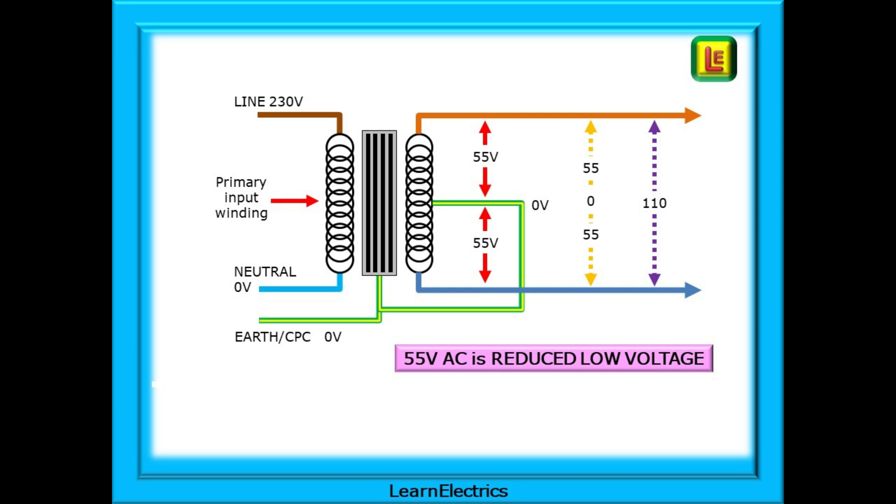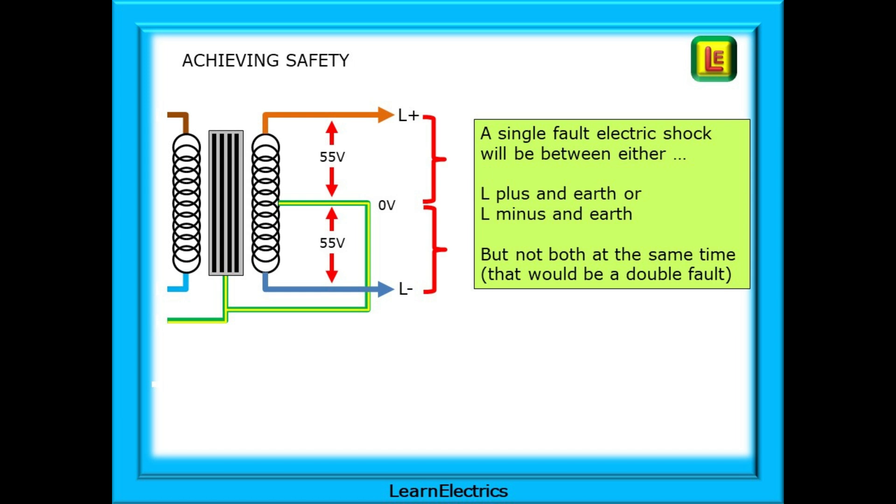An electric shock of 55 volts is unlikely to prove fatal to a healthy adult that is clothed and booted. The 110 volt centre tapped earth system will achieve safety because a single fault electric shock will be between either L plus and earth or L minus and earth, but not both at the same time as that would be a double fault and we only expect one wire to work loose or be damaged at a time.